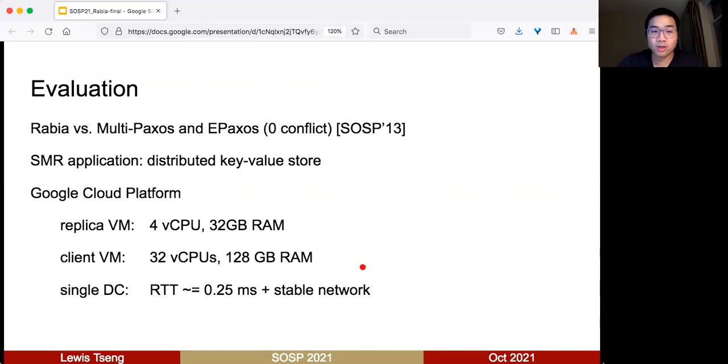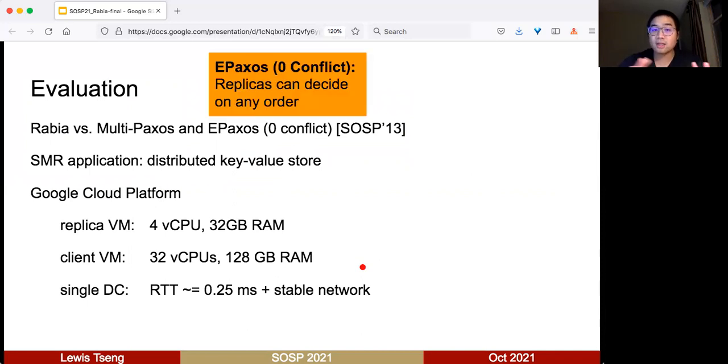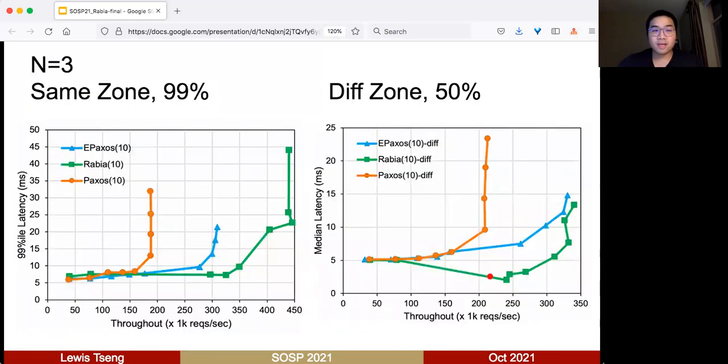We did our evaluation on GCP. We compared against MultiPaxos and EPaxos when there's no conflict. In that case, replicas can decide on any order, which is the best case for them. For GCP, we deployed them in a single data center where RTTs are pretty fast and the network is stable in our experience. In the first case, the ideal case, we have three servers in the same availability zone. Even with 99% higher latency, Rabia is a little bit higher than EPaxos and MultiPaxos, but as you can see, throughput is much higher than the other two.